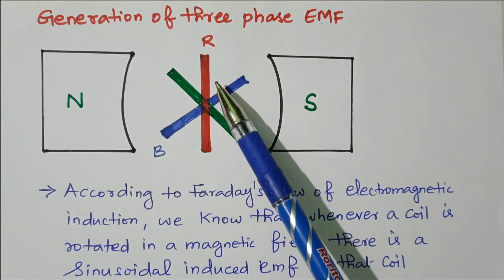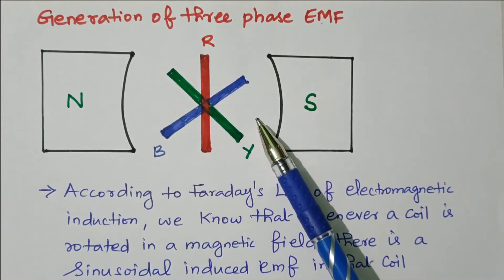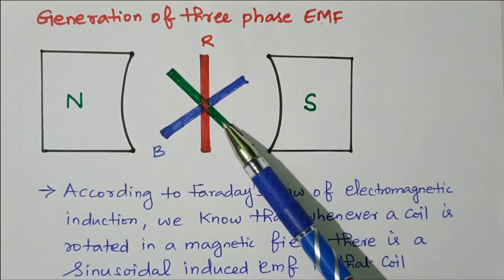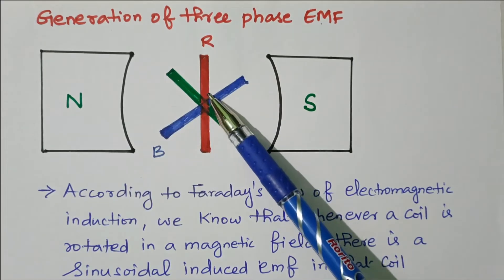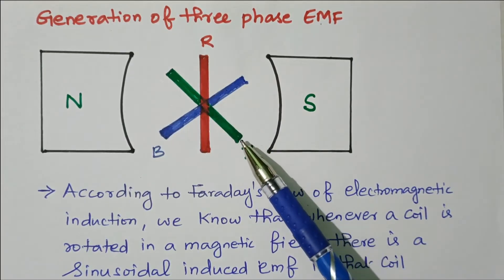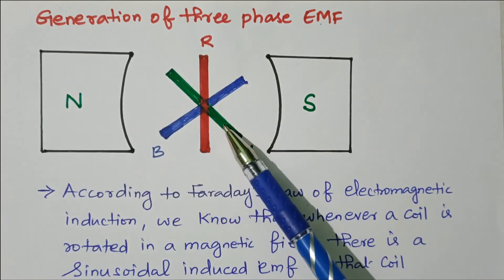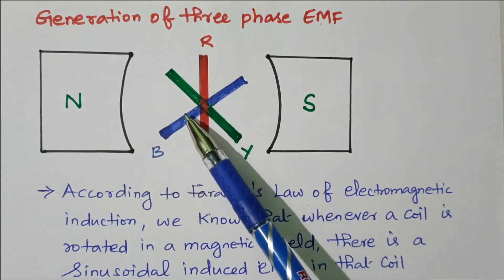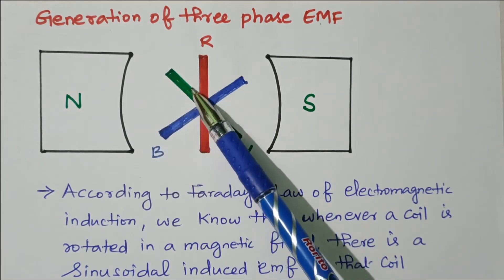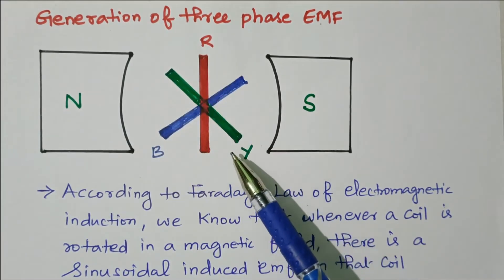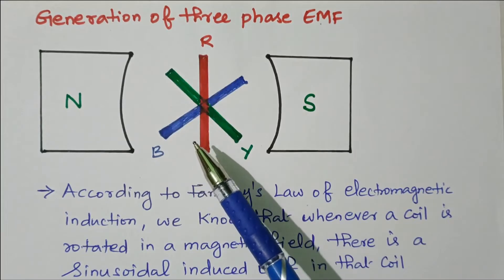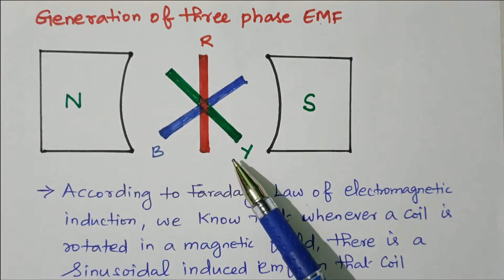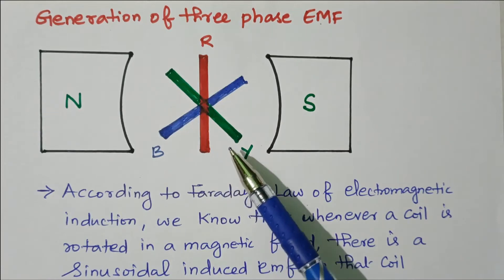Each and every phase is displaced by 120 degrees. Between Red and Y phase there is a 120-degree phase displacement. Between B phase and Y phase there is a displacement of 120 degrees. From B phase to R phase there is a displacement of 120 degrees. So each of these three coils — red, yellow, blue — are placed at a distance of 120 degrees from each other.